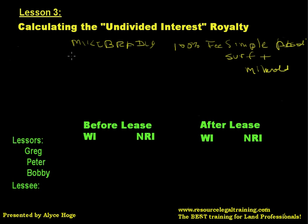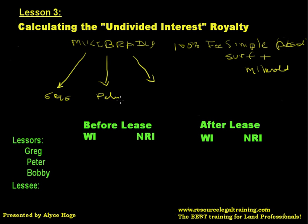So he's the 100% owner. Let's say that he decides to convey his property to his three sons. We're going to leave poor Marcia, Jan, and Cindy out in the cold here. So he's going to leave it to Greg, to Peter, and to Bobby — but not equally. He's going to leave it to Greg 50%, Peter 30%, and that leaves 20% for Bobby.